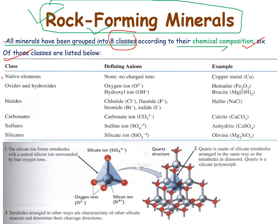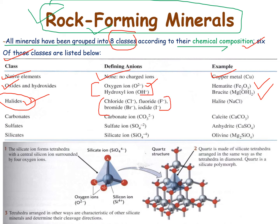The first class is native elements, which have no charge, like copper metal. The second class is oxides and hydroxides — oxygen and hydroxide ions present in minerals like hematite and brucite. Third are halides, which include chloride, fluoride, bromide, and iodide — halite being a common example of that type of mineral.